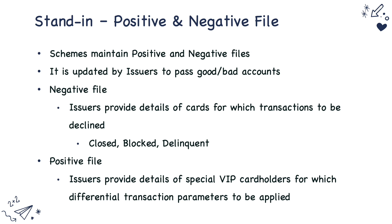The next important thing is exception files, also called positive or negative files. These are maintained by schemes and updated by issuers to indicate good or bad accounts. In the case of a negative file, issuers pass data to schemes indicating that certain cards are blocked — because the account is closed, delinquent, etc. A positive file states that certain cards belong to VIP customers who may require higher transaction limits. When a transaction is received, schemes check these files and decline if the card is on the negative file, or apply higher limits if it is on the positive file.